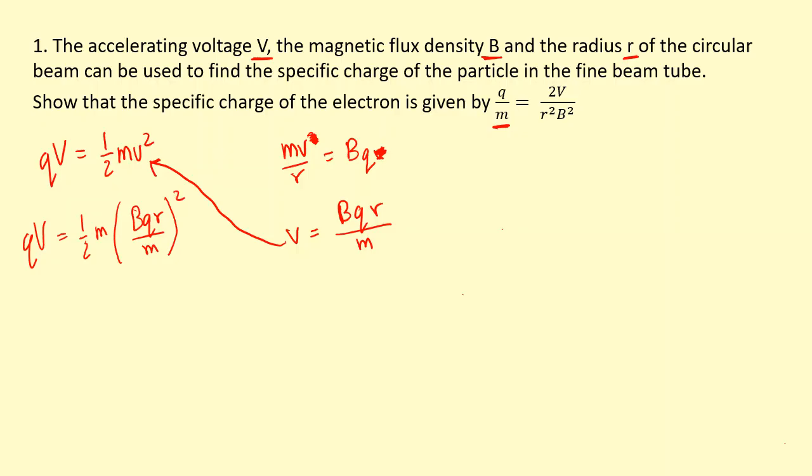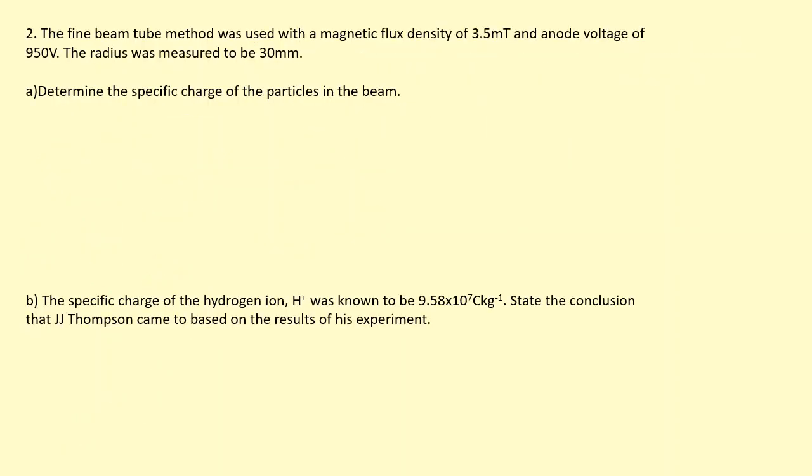This gives me qV equals half m B squared q squared r squared over m squared. I can cancel out m from the top and bottom, cancel out q from both sides, and then rearrange to make q over m the subject. So I get 2V divided by B squared r squared equals the specific charge, which is charge over mass.